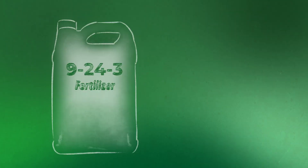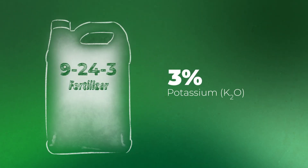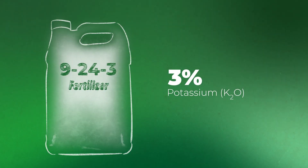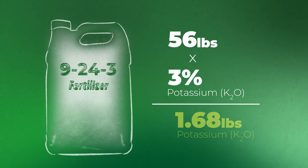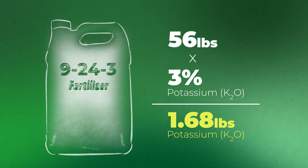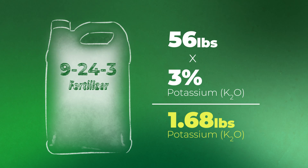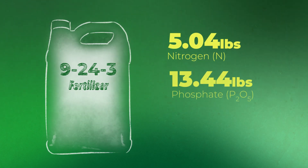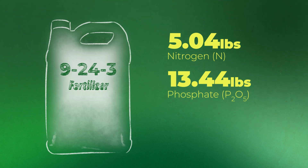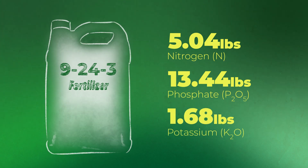Now we repeat the same process for potassium. We have 3% potassium in that solution, so we take our 56 pounds and multiply by 3%. That comes out to just over 1 pound of potassium in that solution. So again, in those 5 gallons, we're getting just over 5 pounds of nitrogen, just over 13 pounds of P2O5, and just over 1 pound of K2O.